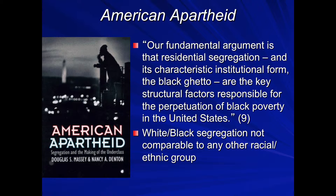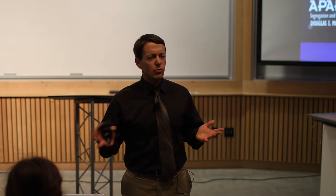This leads to the argument in the book American Apartheid, still a classic in the field, published in the late 1980s. The authors argue: residential segregation and its characteristic institutional form, the black ghetto, are the key structural factors responsible for the perpetuation of black poverty in the United States. They show pretty convincingly there's something unique in the United States about whites and blacks living together — it doesn't happen — and they go so far as to call this apartheid.